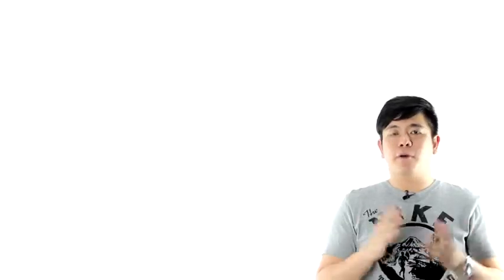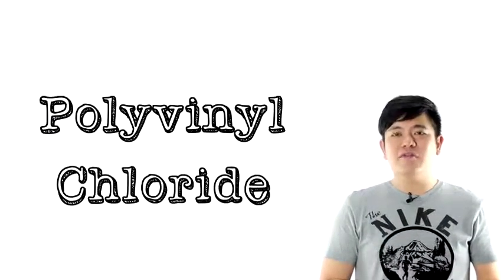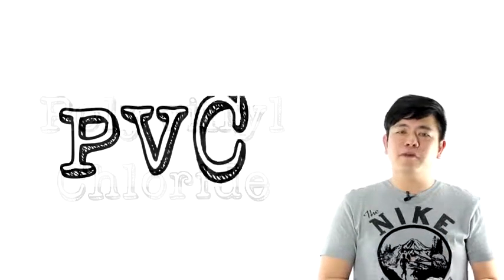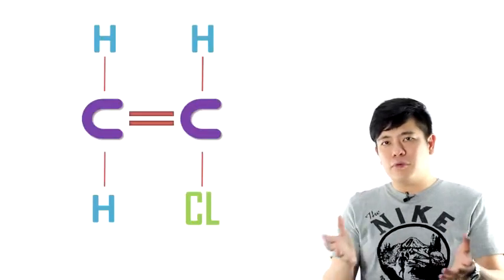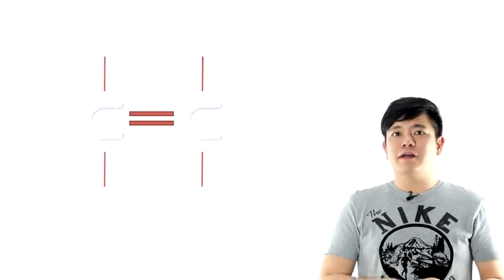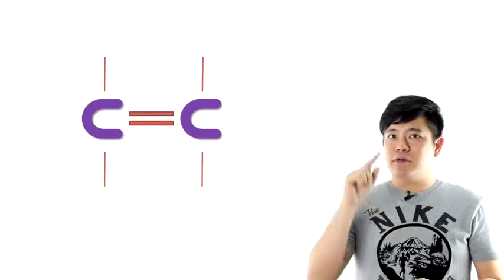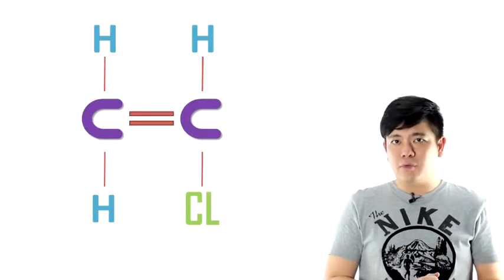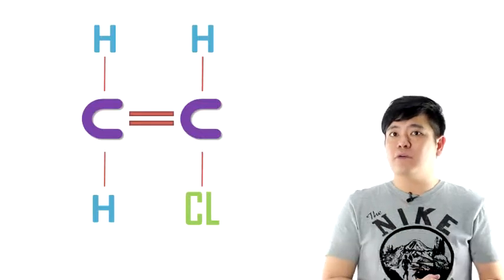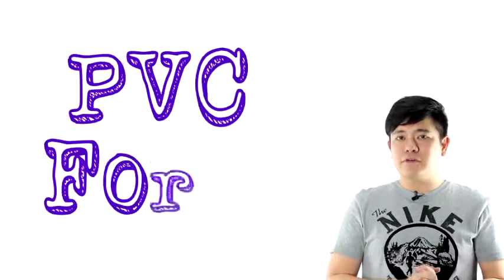Then we have this polymer called polyvinyl chloride, more popular as PVC, you know, PVC pipes and all. You have to remember the monomer of it, two carbon with a double bond in the middle. You see you have one, two, three hydrogen and then one chlorine attached to it. That is the monomer. So what is it used for? For pipes.